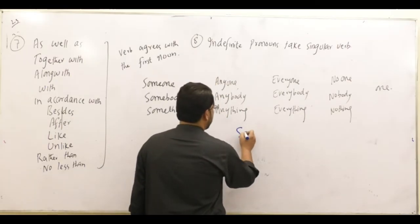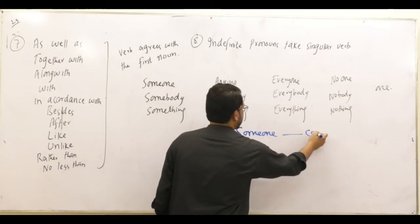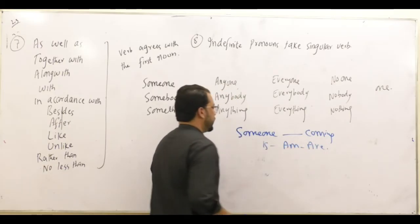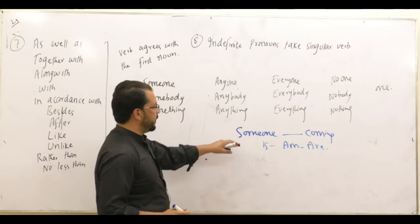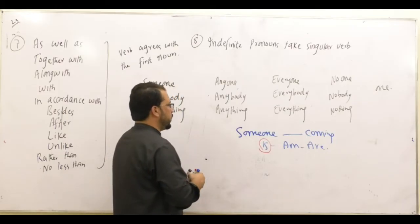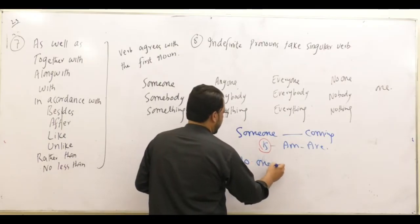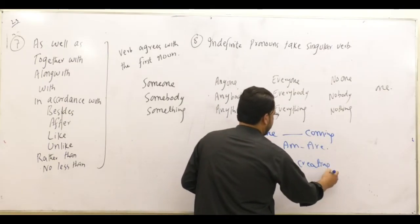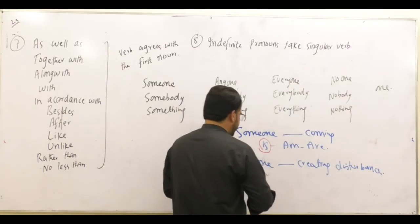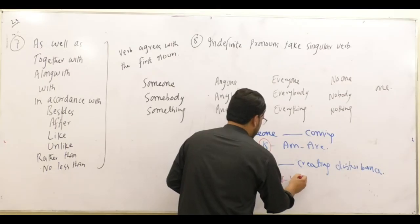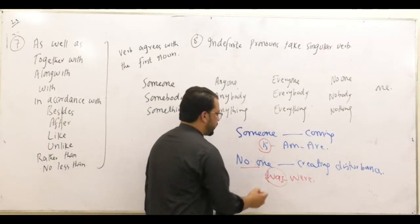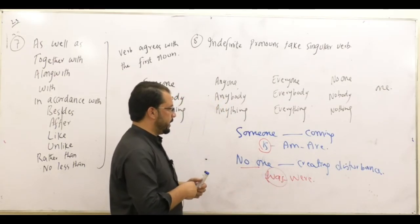For example: someone is coming — the options are is, are. So what is 'someone'? It is an indefinite pronoun, so we use the singular verb: someone is coming. Another example: no one — was or were? No one, because it is an indefinite pronoun, takes the singular form: no one was creating disturbance.